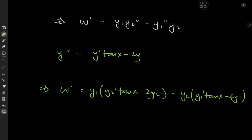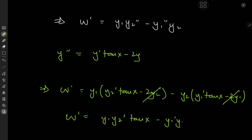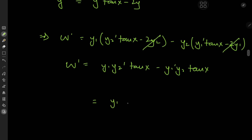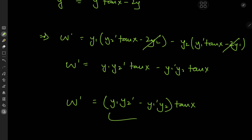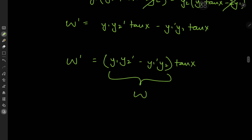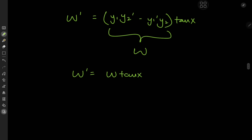Notice that the terms negative two y1 y2 and positive two y1 y2 cancel straight away. This means W prime equals y1 times y2 prime times tangent x minus y1 prime times y2 times tangent x, and we can factor out tangent x, giving us the quantity y1 y2 prime minus y1 prime y2 multiplied by tangent x. That quantity is exactly the Wronskian, so we have W prime equal to W times tangent x — a separable differential equation in W and x, which is easy to solve.